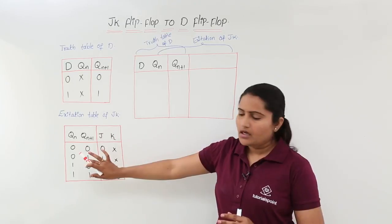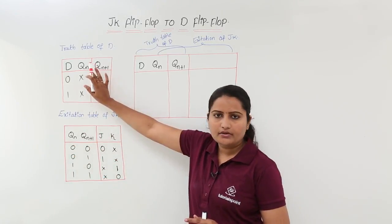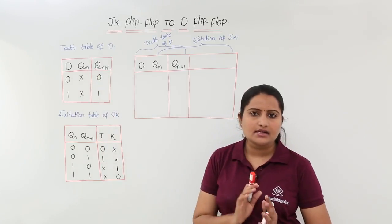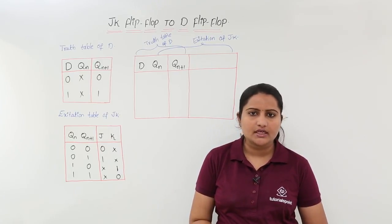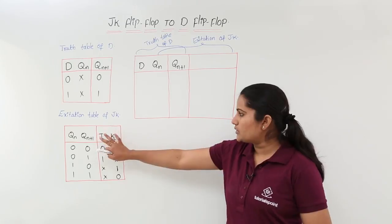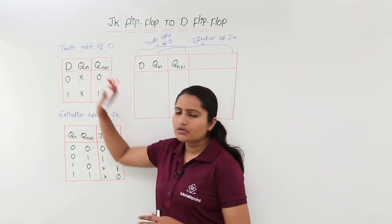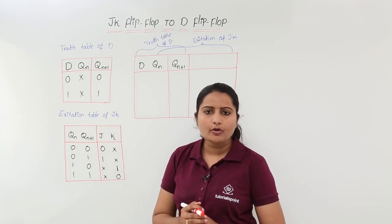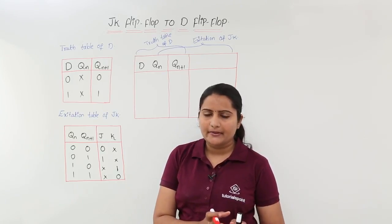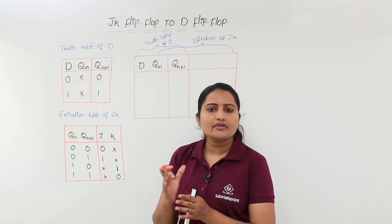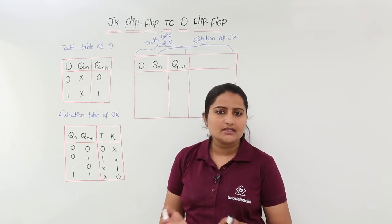We discussed how to design the excitation table of JK and the truth table of D in previous classes. As you know, the D flip-flop is a transparent flip-flop — whatever we give at input D, the same thing appears at the output, which is the next state Q(n+1).